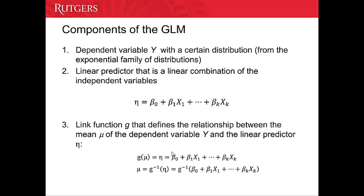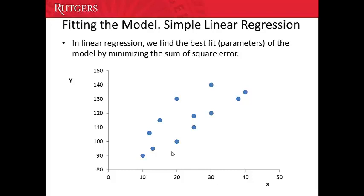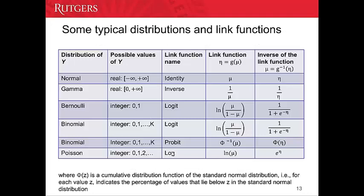The generalized linear model predicts the nonlinear relationship between independent and dependent variables. Because the two variables are not linearly related, we use the linear predictor as a bridge between them to find their relationship. For parameter estimation, we use the same method as in linear regression — we minimize the sum of squared errors.